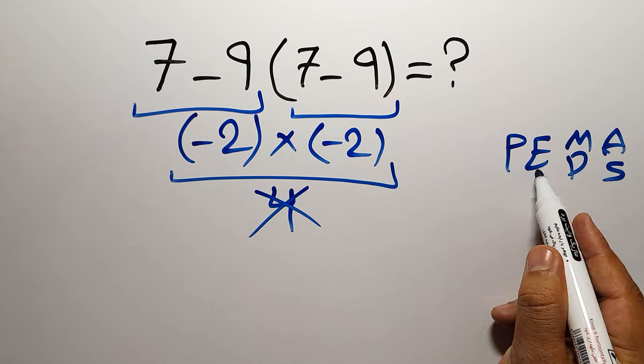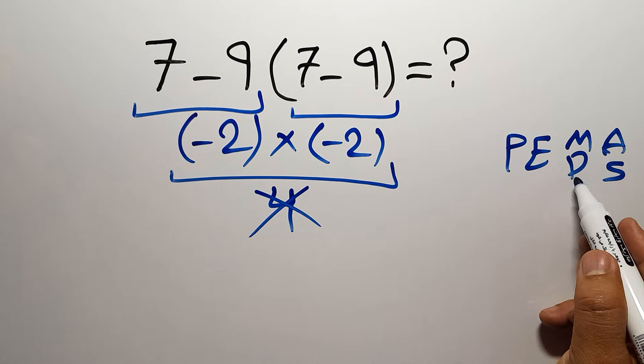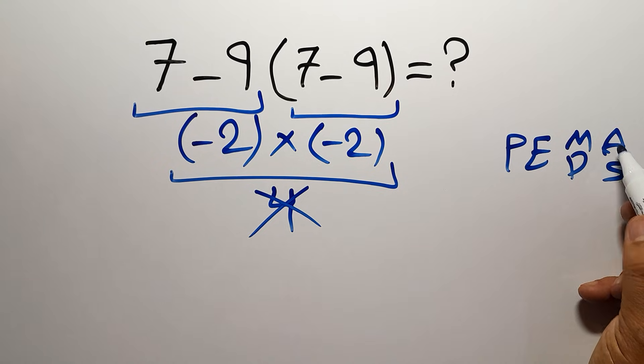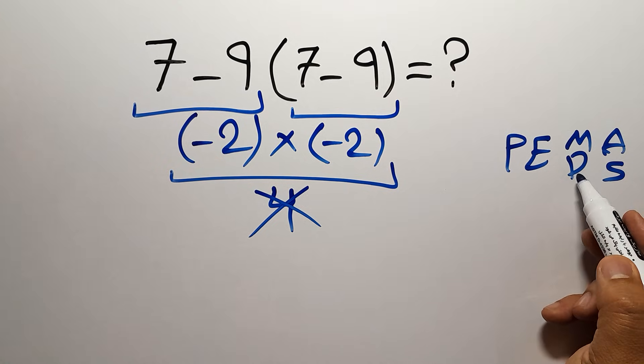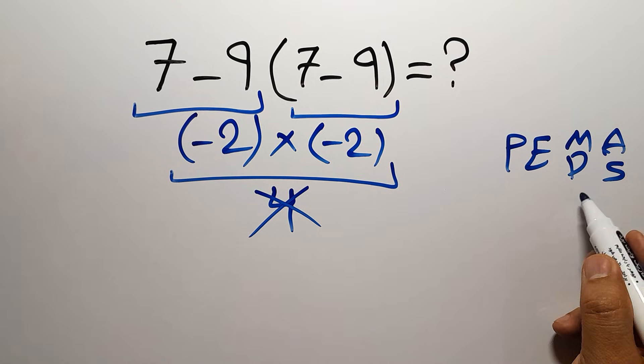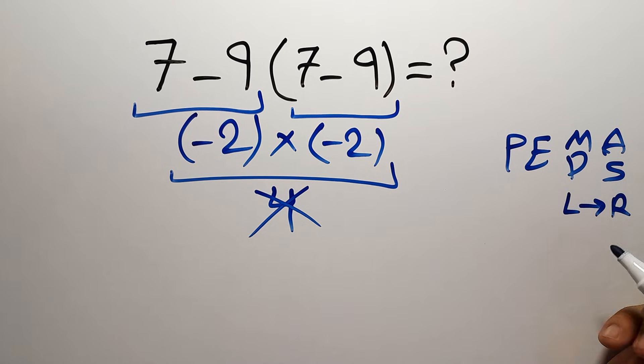First we have to do parentheses then exponents then multiplication or division and finally addition or subtraction. We need to pay attention that multiplication and division have equal priority and we have to work from left to right and the same applies to addition and subtraction.